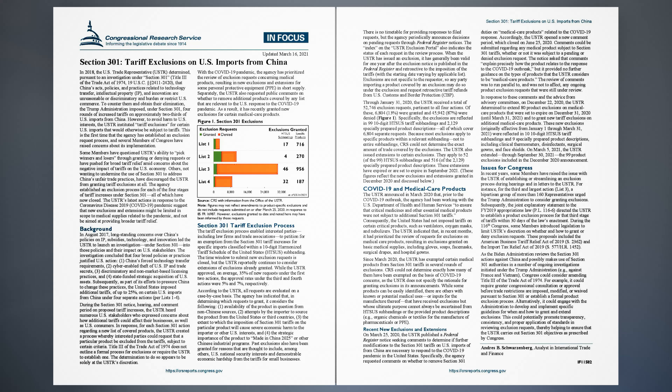In 2018, the U.S. Trade Representative, USTR, determined, pursuant to an investigation under Section 301, Title III of the Trade Act of 1974, 19 U.S.C. Sections 2411 and 2420, that China's acts, policies, and practices related to technology transfer, intellectual property (IP), and innovation are unreasonable or discriminatory and burden or restrict U.S. commerce.